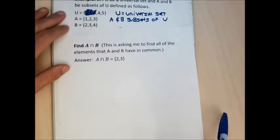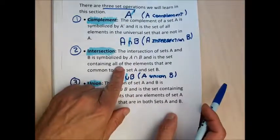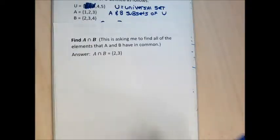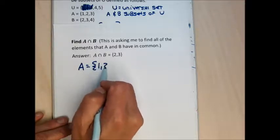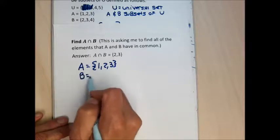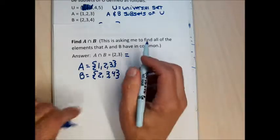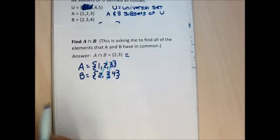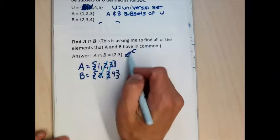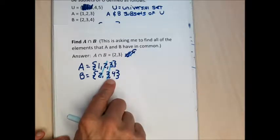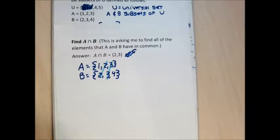The next thing is to find A intersection B, which is the elements in common between sets A and B. Set A has numbers 1, 2, and 3. Set B has numbers 2, 3, and 4. A intersection B is what they have in common: both have a 2 and both have a 3. So A intersection B is the set containing 2 and 3. To find the intersection, I looked at both sets and created a new set from the elements they had in common.